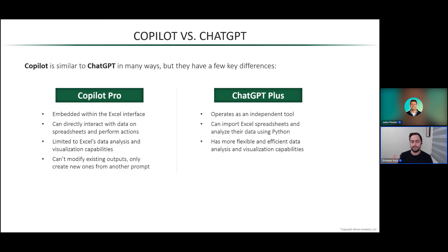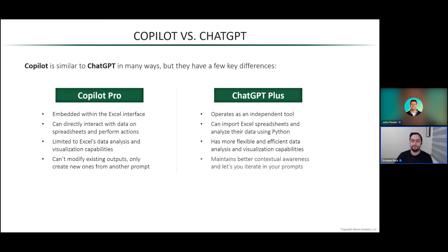Another thing you'll notice during the demos is that Copilot can't modify existing outputs — it can only create new ones from another prompt. Say I have it create a new formula column and I notice it's not giving me exactly what I wanted. Copilot can't fix the formula it already created; it will add a second one, and I'd have to delete the first one, which can get a little bit cumbersome. ChatGPT, on the other hand, maintains much better contextual awareness — it almost feels like a conversation and lets you iterate and build upon your prompts.